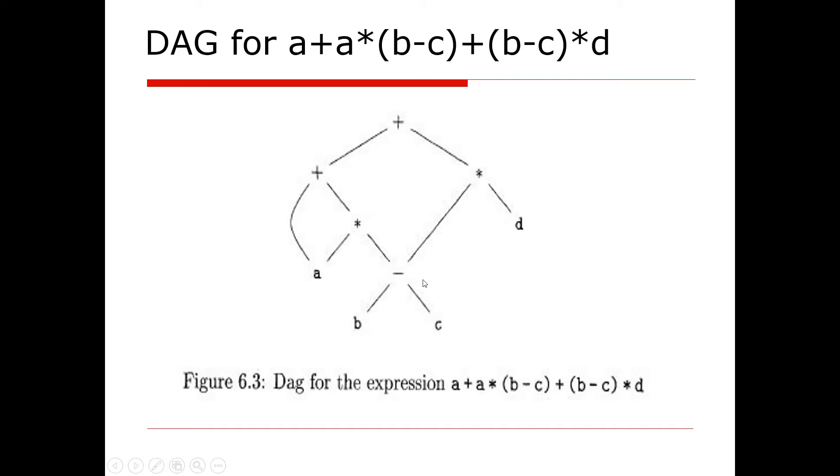Now the second-last two expressions have been done. We only have to add a with this total part, so we gave a plus sign and add the total thing together. Finally, a + a*(b-c) and (b-c)*d will be added together, so we get this plus sign and add them together.